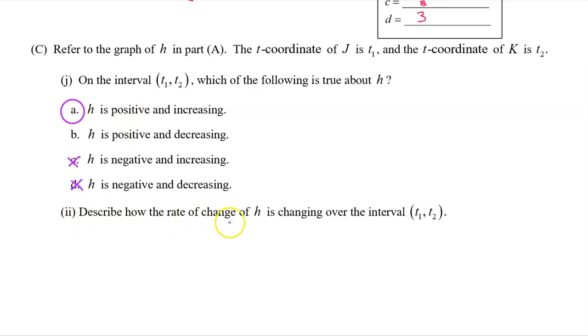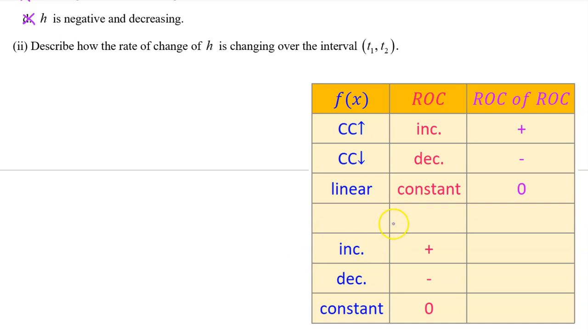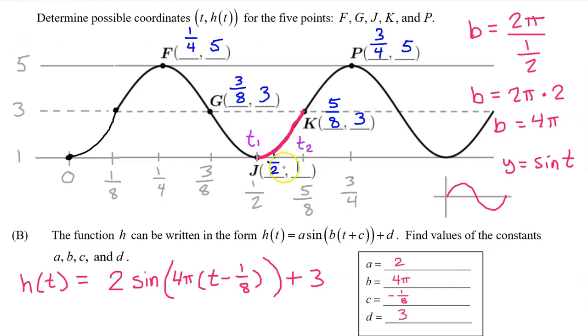See part two. Describe how the rate of change of h is changing over the interval from t1 to t2. If you have not yet memorized this chart, pause the video and memorize it right now. I recommend that you write this chart on a piece of scratch paper from memory right before you start the AP exam. This is the part of the chart that will allow us to determine how the rate of change is changing on the interval from t1 to t2. The rate of change will be increasing if h of t is concave up, and the rate of change will be decreasing if h of t is concave down. h of t is concave up on the interval from t1 to t2, therefore the rate of change is increasing.